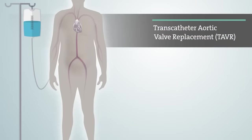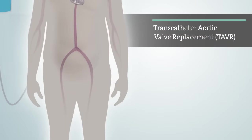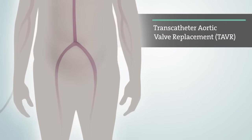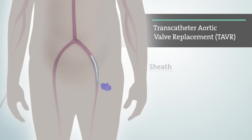During the TAVR procedure, you may be placed under anesthesia. Once under anesthesia, a small incision will be made in your leg, where your doctor will insert a short hollow tube, called a sheath, into your femoral artery.